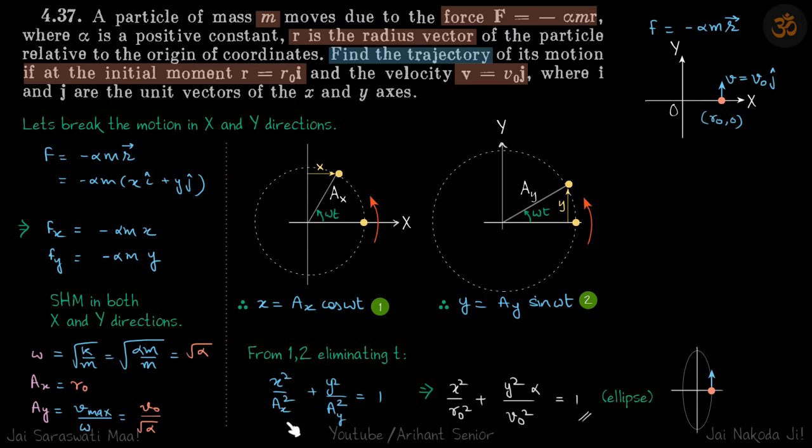What we get is x square by ax square plus y square by ay square equals 1, or x square by r naught square plus y square by v naught square by alpha equals 1.